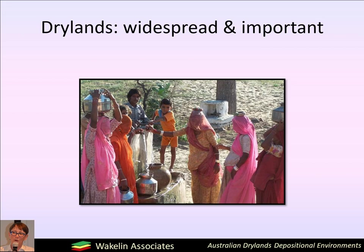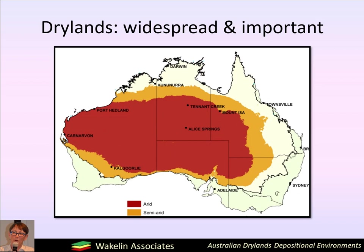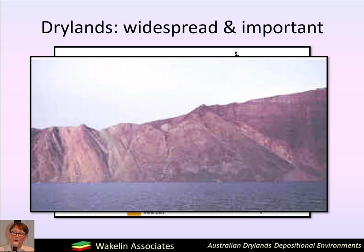The drylands are widespread and important. Globally they constitute 40% of the world's land mass and host 30% of the world's population. The main Australian continent is 80% drylands. Although thinly populated, this holds a number of towns and Indigenous homelands and supports many industries and businesses. Sediments deposited in the drylands are also present throughout the rock record.